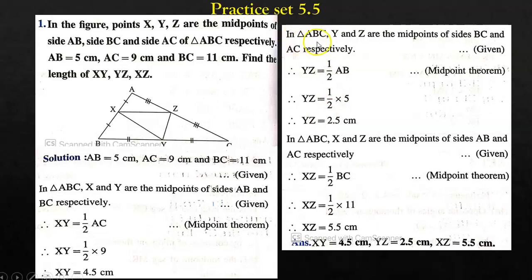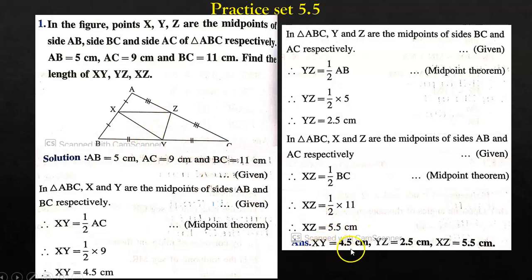Y and Z are midpoints of sides BC and AC respectively, so YZ is half of AB = half of 5 = 2.5 cm. X and Z are midpoints of AB and AC respectively, so XZ is half of BC = half of 11 = 5.5 cm. Therefore XY = 4.5 cm, YZ = 2.5 cm and XZ = 5.5 cm.